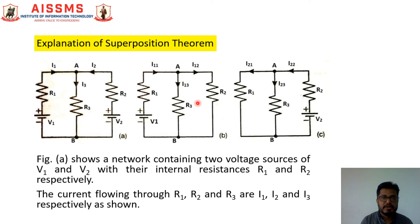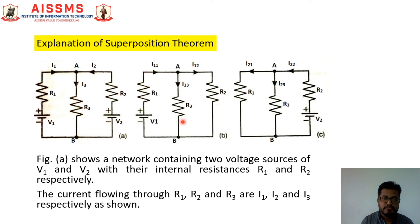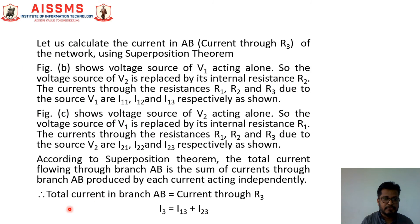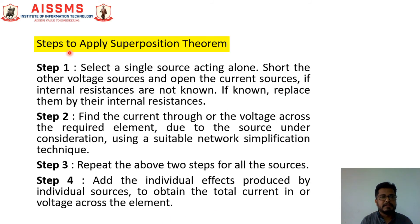So now we have two currents. When we consider V1 source acting alone, we have current I13 flowing through branch AB. According to the Superposition Theorem, the total current I3 flowing through branch AB is the addition of currents I13 and I23. Therefore, total current in branch AB: I3 = I13 + I23.